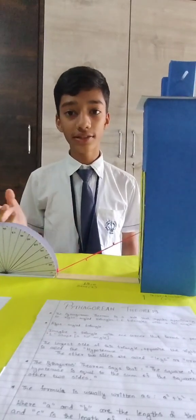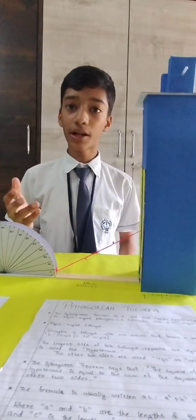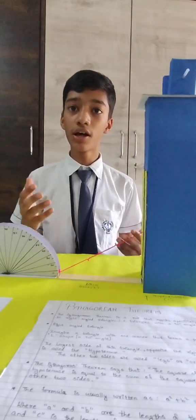This theorem allows you to find the length of one side if the length of the other two sides are given in a right-angled triangle. In essence, this is a fundamental relationship between the sides of a right-angled triangle.